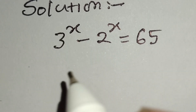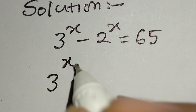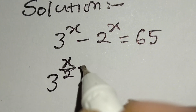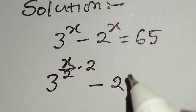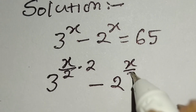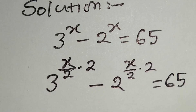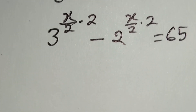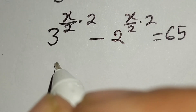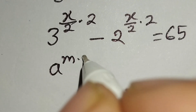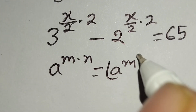Here we can write 3 to the power x as 3 to the power (x/2) times 2, and 2 to the power x as 2 to the power (x/2) times 2, equal to 65. We know the math identity: a to the power m times n is equal to a to the power m, whole power n.